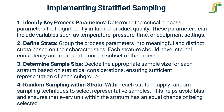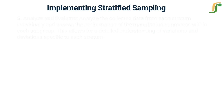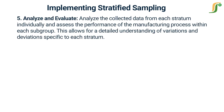Step four: random sampling within strata — within each stratum, apply random sampling techniques to select representative samples. This helps avoid bias and ensures that every unit within the stratum has an equal chance of being selected. Step five: analyze and evaluate — analyze the collected data from each stratum individually and assess the performance of the manufacturing process within each subgroup. This allows for a detailed understanding of variations and deviations specific to each stratum.